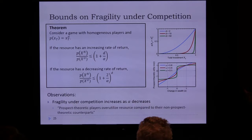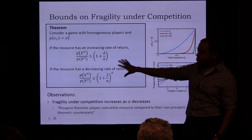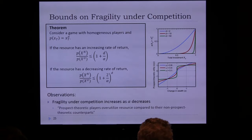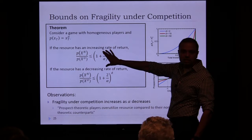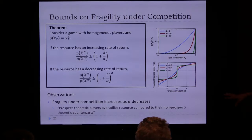Key observation: prospect theoretic individuals tend to over-utilize the resource compared to non-prospect theoretic individuals. Specifically, as alpha falls below 1 (more S-shaped), the upper bound grows larger. If you're designing or managing this resource and don't account for prospect-theoretic behavior, you will underestimate the probability of failure of your resource.